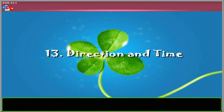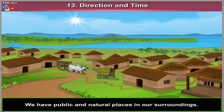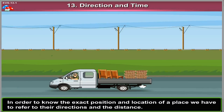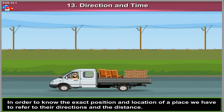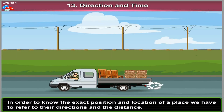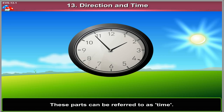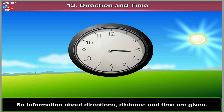Chapter 13: Direction and Time. We have public and natural places in our surroundings. In order to know the exact position and location of a place, we have to refer to their directions and the distance. Also, we have divided the day into different parts. These parts can be referred to as time. So information about directions, distance and times are given.